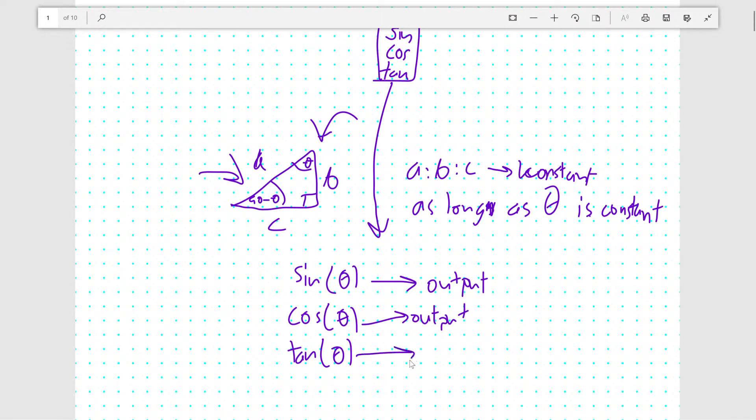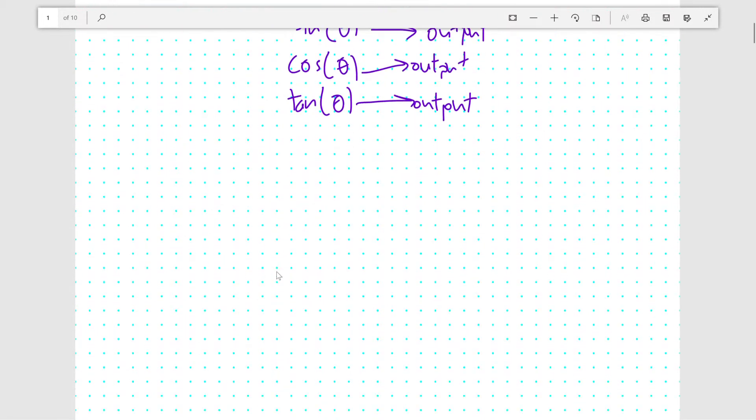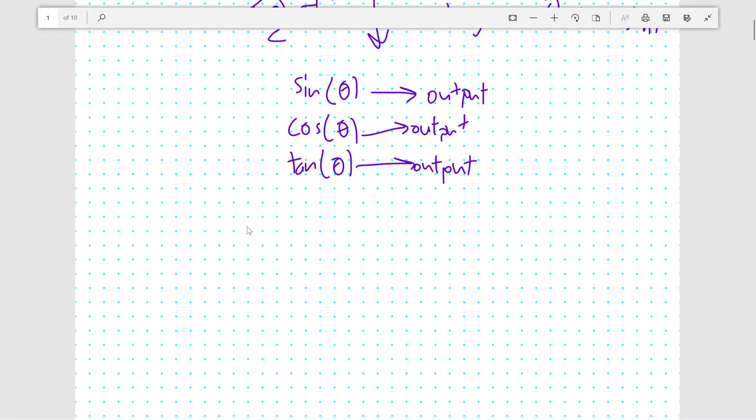So you might have heard of the mnemonic SOHCAHTOA in your studies before, and this is basically to help you remember that the sine of any angle is, in this triangle where the hypotenuse is labeled H, you have one angle labeled theta, the opposite side of that angle is labeled O, and the final side is labeled A. Sine of theta will be, in this right angle triangle, the length of the opposite side over the length of the hypotenuse.